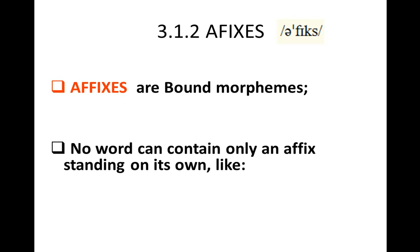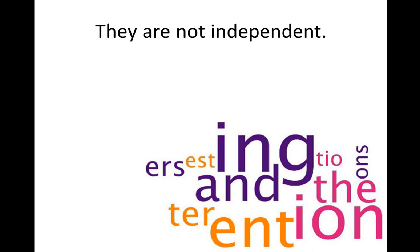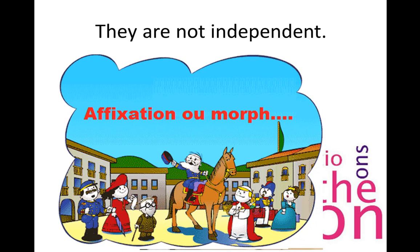No word can contain only an affix standing on its own. It is impossible to have standalone words like '-s,' '-ed,' or '-al,' because these are affixes — bound morphemes that need to be attached to another word. We also see a blend: words like '-ion' are not free morphemes, though 'and' functions as a free morpheme.